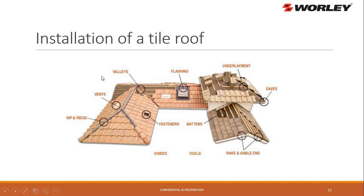The installation of a tile roof is pretty much the same as a shingle roof — you get your ridge, vents, valleys, flashings, and underlayments. We'll talk about the underlayment in a moment. The battens are here, and the rake and eaves here. The bird stop usually goes in the eave tiles all the way around.